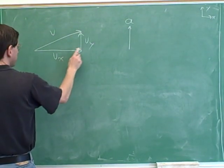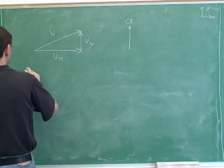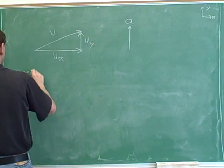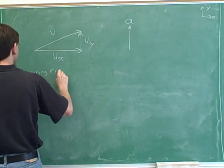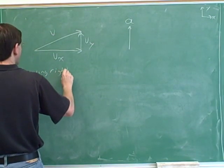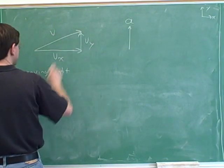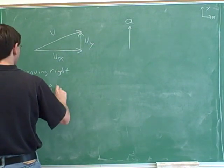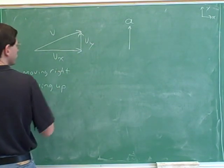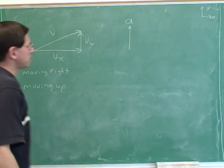Our horizontal velocity is to the right — we're moving right. And our vertical velocity is up — we're moving up.